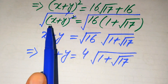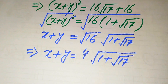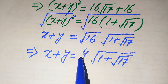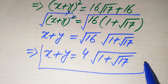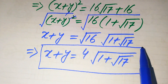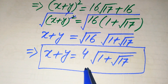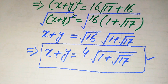We again neglect the negative value since we solve this problem for only positive values of x + y. So the final answer is x + y = 4√(1 + √17). Thank you so much for watching this video. Please subscribe to my channel for more exciting videos.